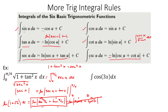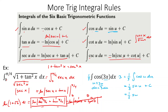Second example: the integral of cosine of 3x. We have a rule for cosine of u, so let u equal 3x. Then du equals 3 dx, so we put a 3 inside and a 1 third outside. We get 1 third times the integral of cosine of u du, which equals 1 third sine of u plus c. Going back to x's: 1 third sine of 3x plus c.